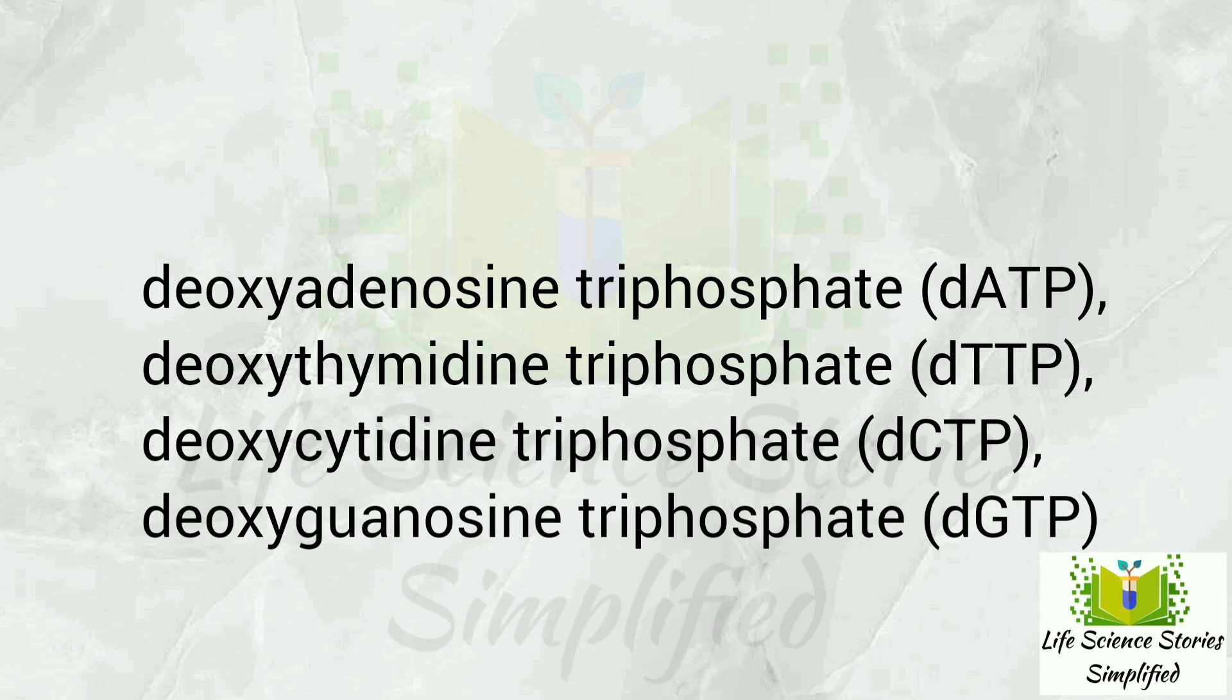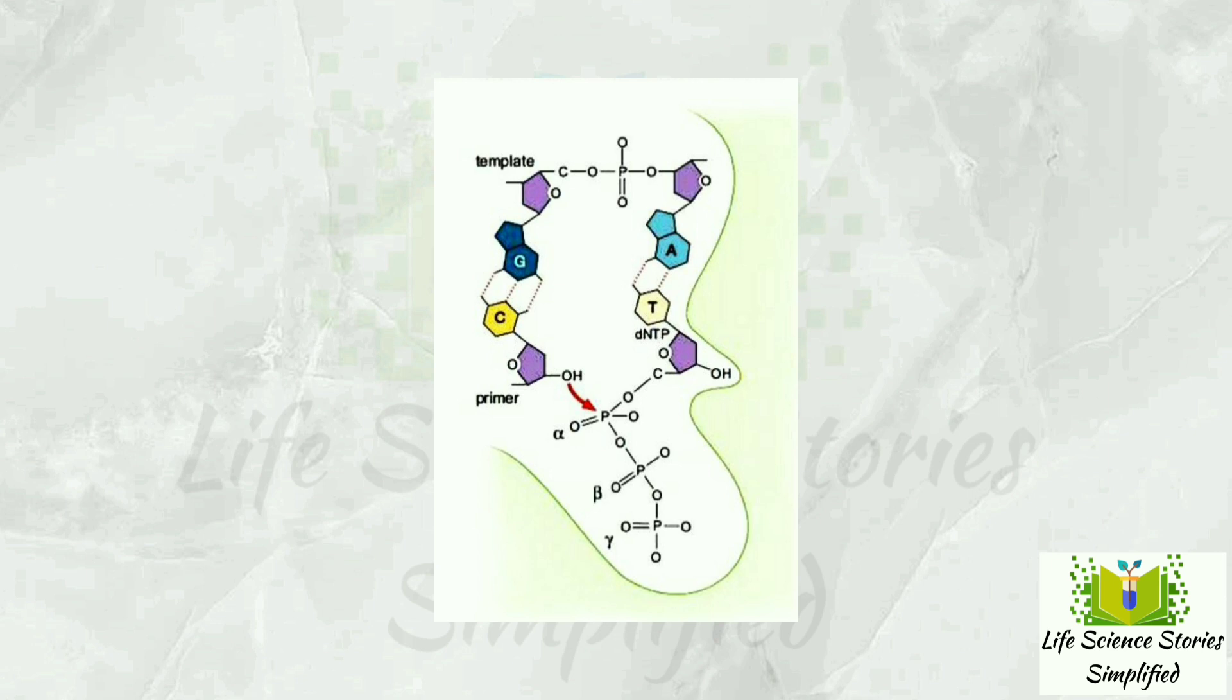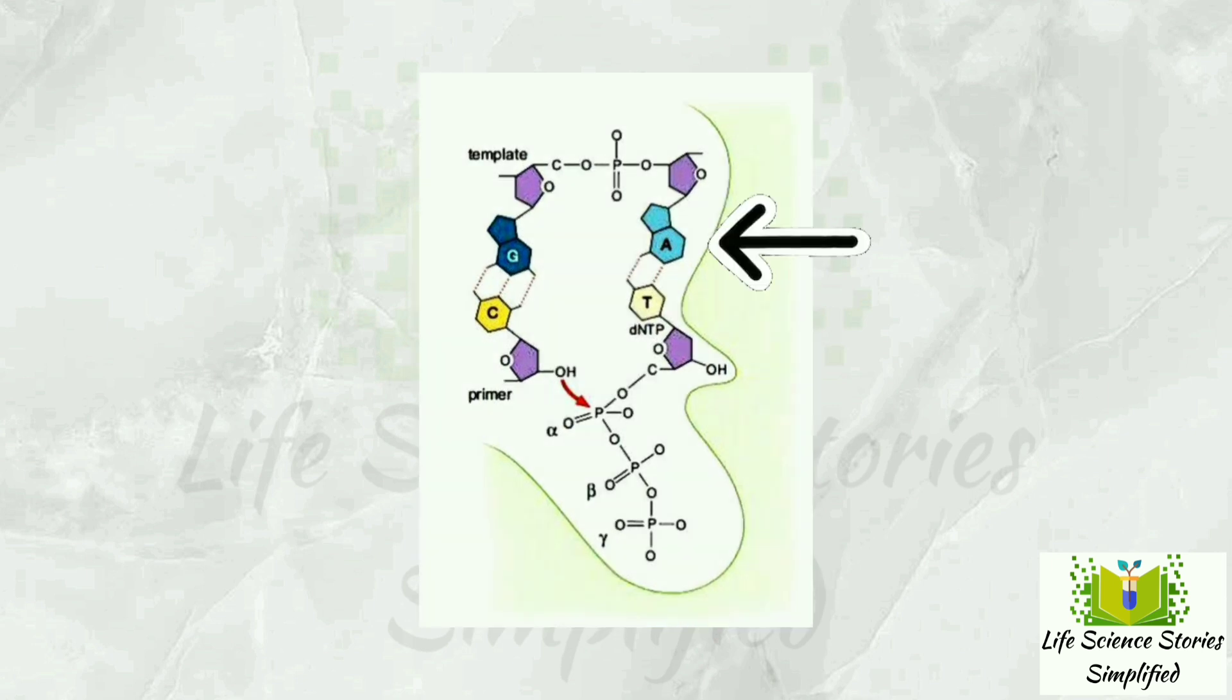Of these four dNTPs, one at a time, one dNTP will be added to the active site. In the template strand, if adenosine is present, then the correct base pair will form with dTTP.